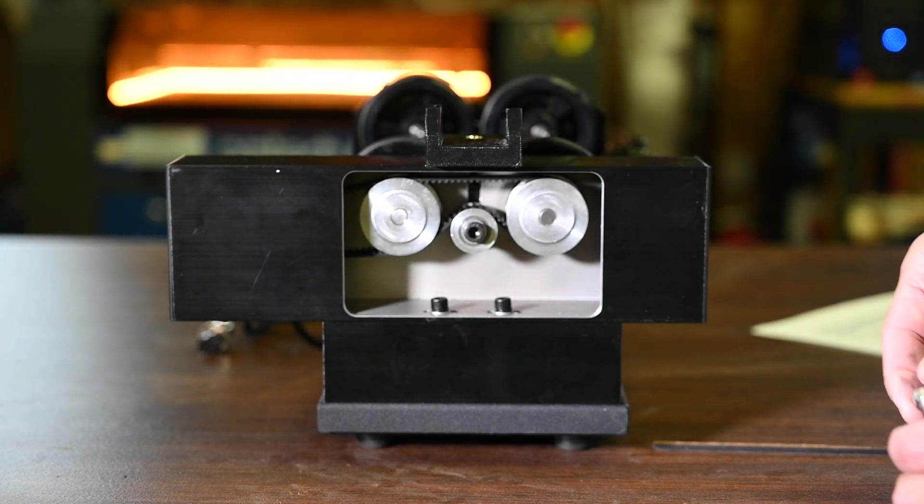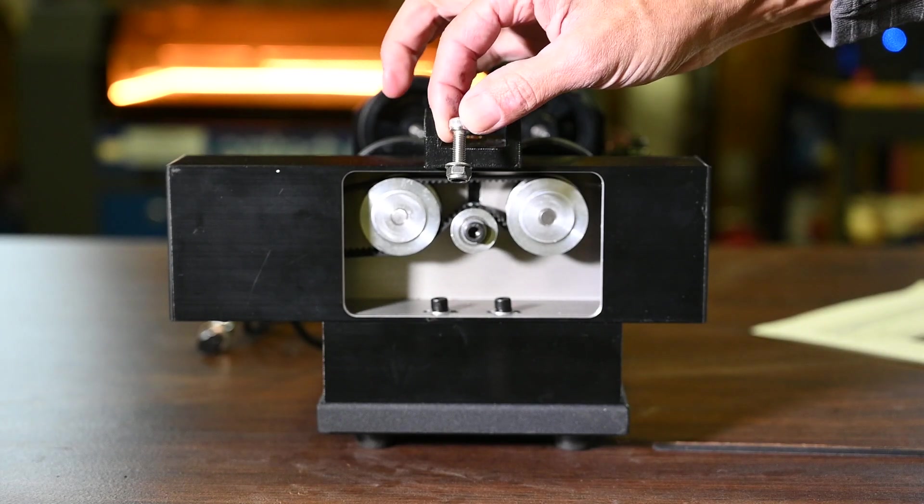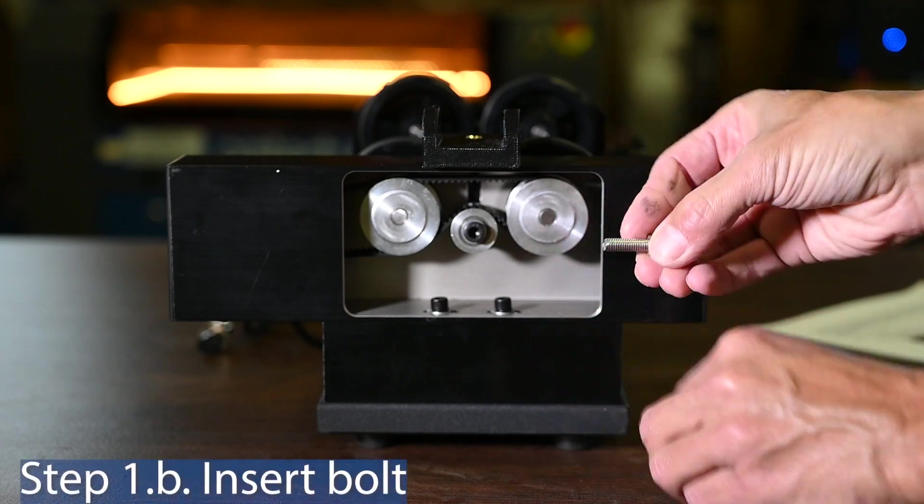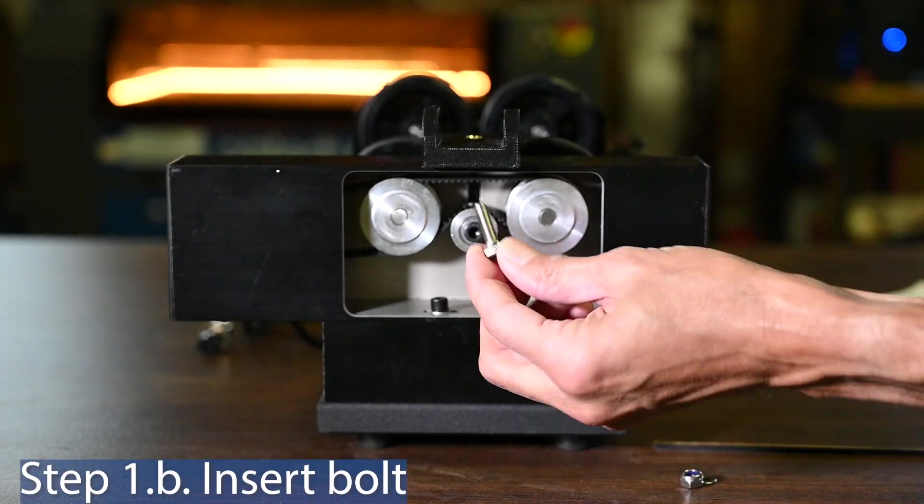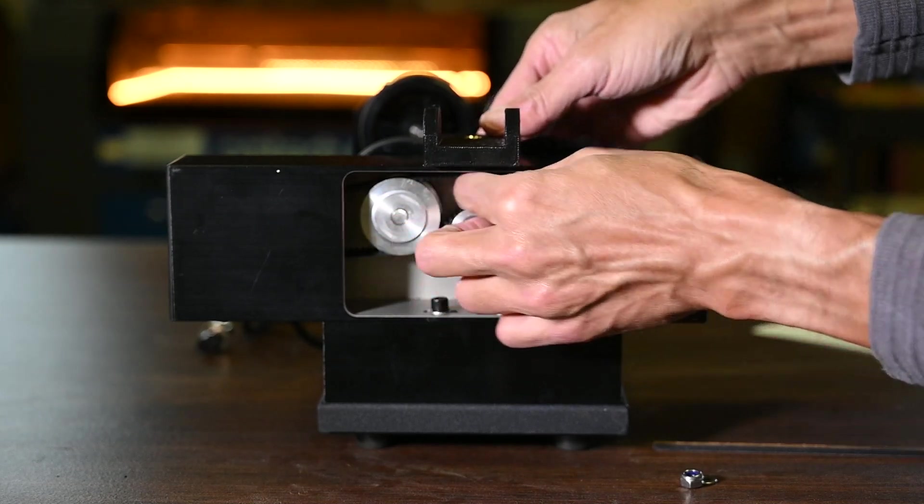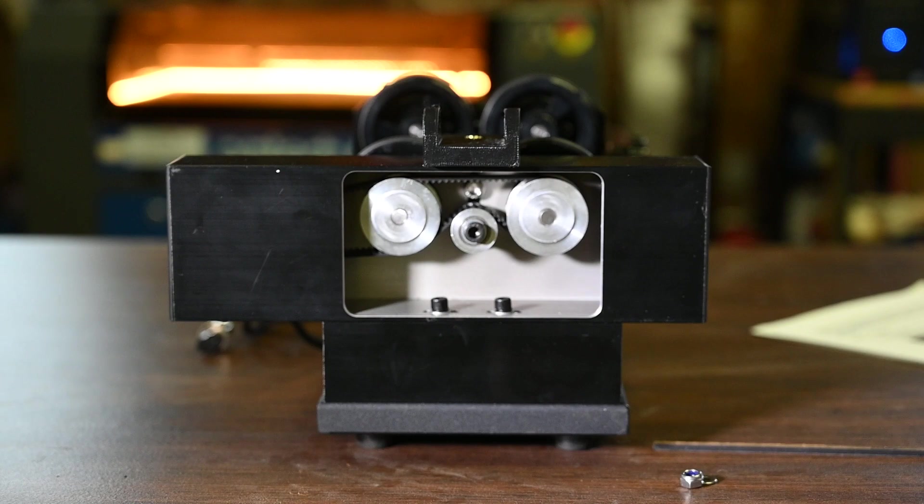Once it is in place, take the small bolt that is in the bag labeled step 1B, remove the nut and the washer, and then simply place this bolt straight through that slot so that it comes out the hole in the front of this front base plate.